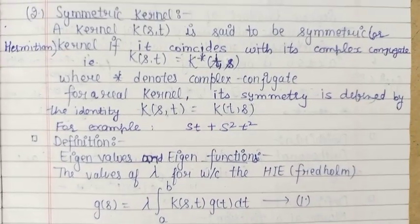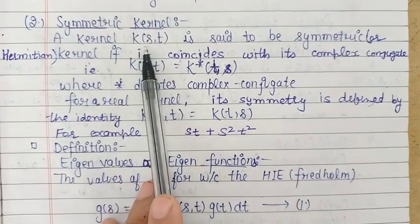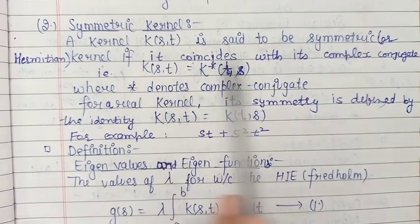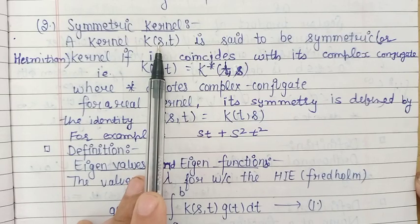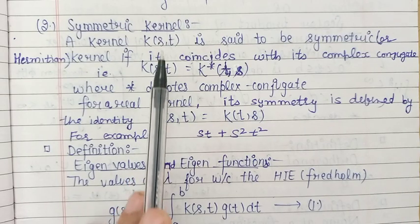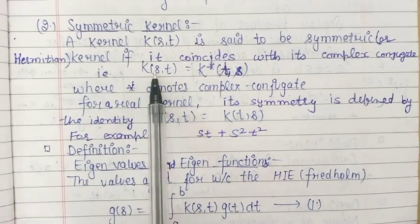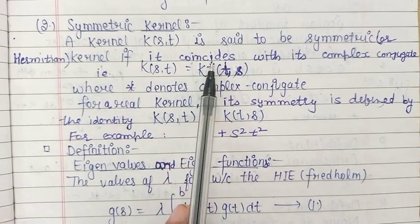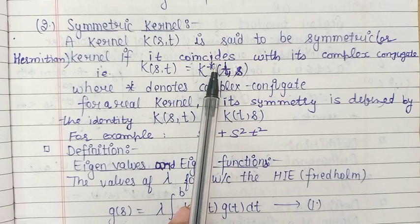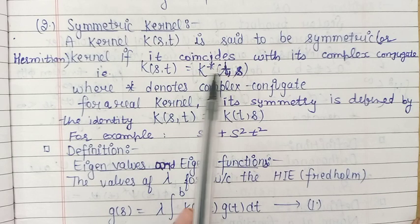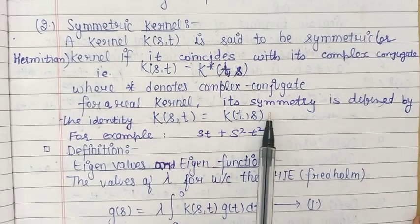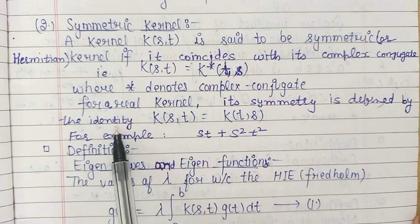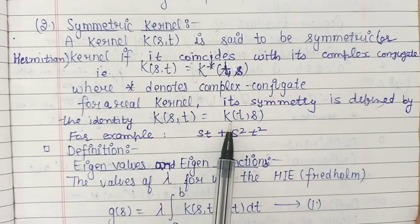The second type of kernel is the symmetric kernel. A kernel k(s,t) is said to be a symmetric kernel, or Hermitian kernel, if the kernel k coincides with its complex conjugate. That means k(s,t) is the same as k*(t,s), where the star denotes the complex conjugate. In the case of a real kernel, the symmetry is defined by the identity k(s,t) = k(t,s).